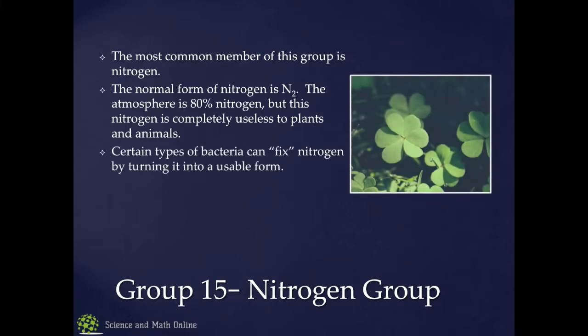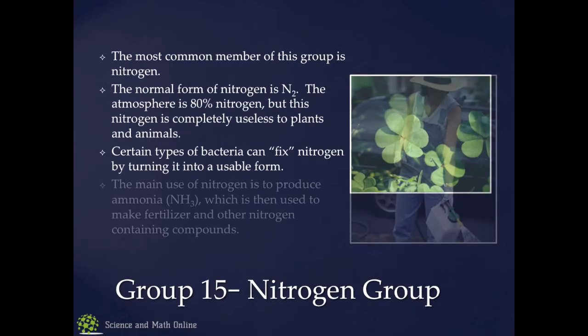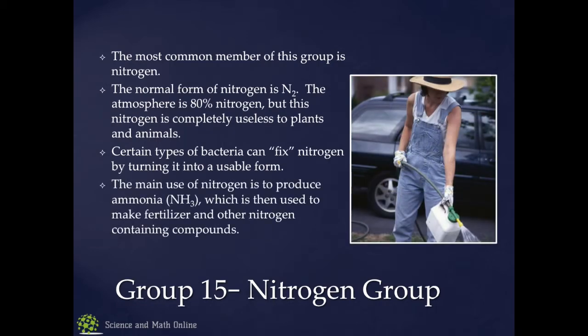We have to fix nitrogen — turning it either into ammonia or nitrate. There are plants like clovers and beans that have bacteria in their roots that help turn atmospheric nitrogen into a usable form. Lightning bolts do that as well. Nitrogen's main use, like hydrogen, is to make ammonia for fertilizer and other nitrogen-containing compounds.